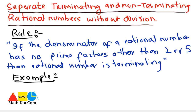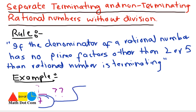If you are asked to identify whether 9 over 7 is a terminating or non-terminating rational number, you will check its denominator — whether it is a prime number or not. A prime number is divisible by one and itself. Since 7 is a prime number, it means that 9 over 7 is a non-terminating rational number.